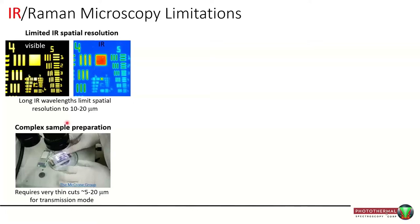There's also the issue of complex sample preparation. For infrared, the best quality spectra are typically obtained in transmission mode through thin sections — thin cuts — where sample thickness needs to be in the order of 5 to 20 microns. And there are some things you just cannot cut or are very difficult to cut.